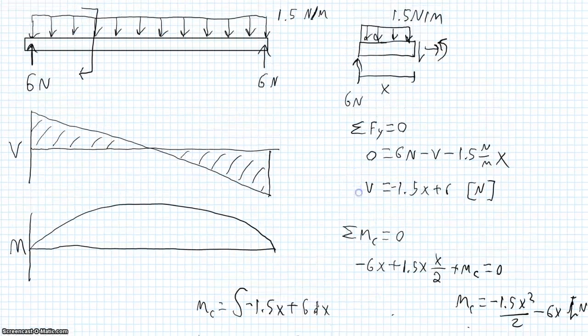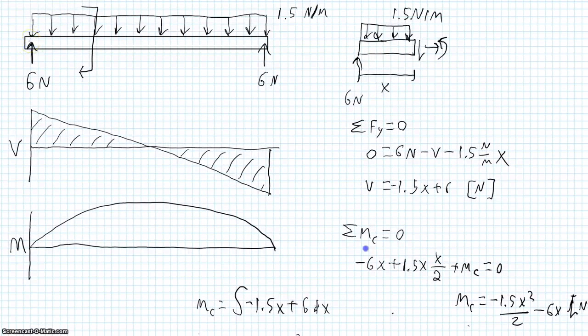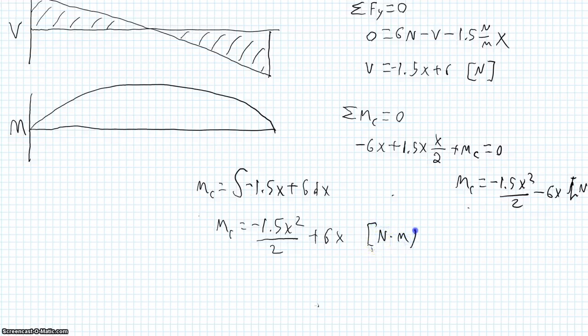Then our moment at our cut is going to be 1.5x squared over 2 plus 6x plus a constant of integration. Now here, our moment at our left-hand side, our boundary condition is 0. And so that constant of integration is also 0, so we don't have to worry about it. And our units are newtons times meters.